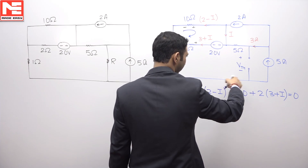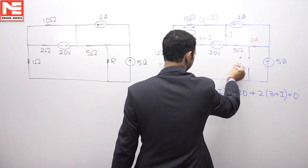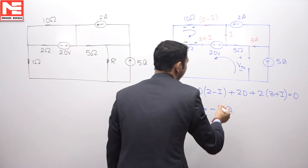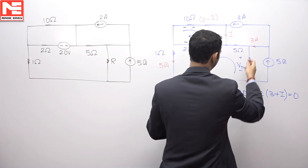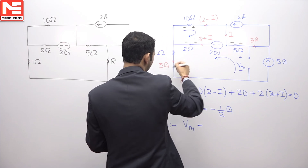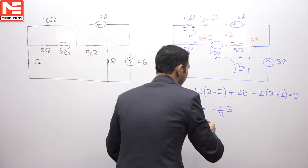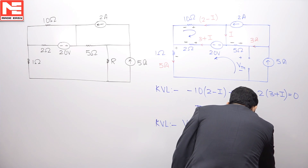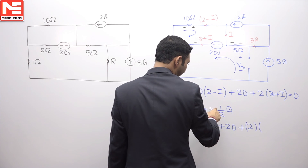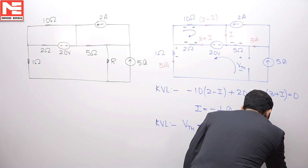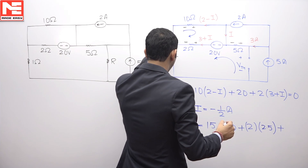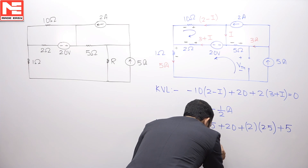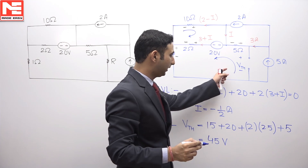Therefore, Vth — applying KVL in this loop — Vth will be equal to 5 into 3, which is 15, because the drop will be plus-minus here also as the current is downward. So Vth will be 15 plus 20 plus 2 multiplied by (3 plus i). Since i is minus 0.5, so 3 minus 0.5 will be 2.5, plus 5 into 1 is 5 volts. Hence, solving this, Vth is coming equal to 45 volts. We have calculated the Thevenin voltage as 45 volts.